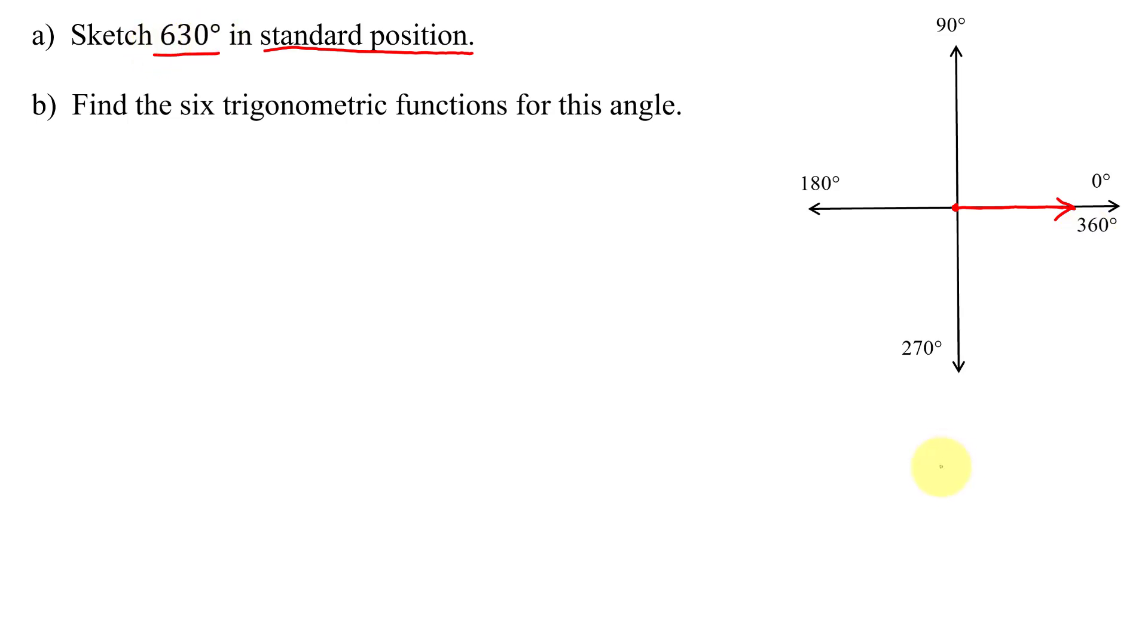So you take your given angle of 630 degrees. You subtract one revolution of 360 degrees. And you get 270 degrees. So now I know that my angle is one complete revolution, which is to here. And then I have to keep going another 270 degrees. So my terminal side is going to lie along the negative y-axis.